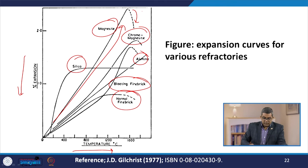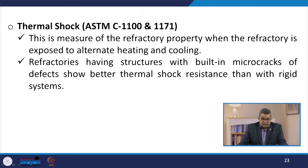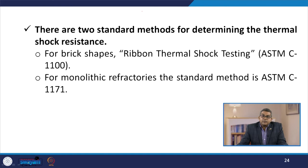Thermal shock, with reference standards ASTM C1100 and C1171, is the measure of the refractory property when exposed to alternate heating and cooling. Refractories having structures with built-in micro-cracks or defects show better thermal shock resistance than rigid systems. There are two standard methods: for brick shapes, the ribbon thermal shock test (ASTM C1100); for monolithic refractories, ASTM C1171.